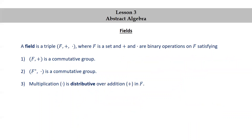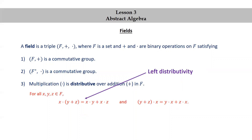The third big property is that multiplication is distributive over addition in F. That means for all x, y, z in F, x × (y + z) = x × y + x × z. And (y + z) × x = y × x + z × x. The first is called left distributivity, and the second, right distributivity.